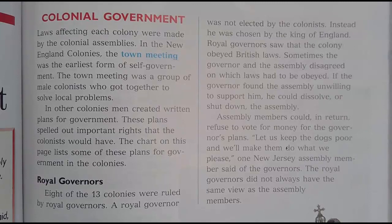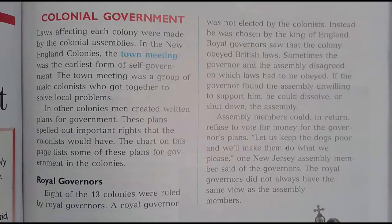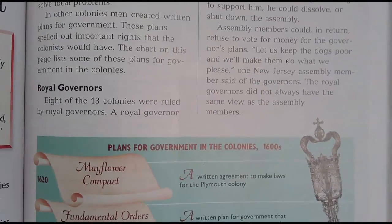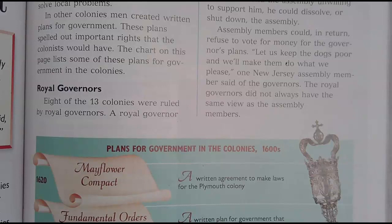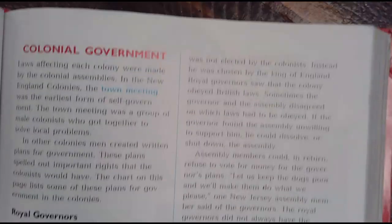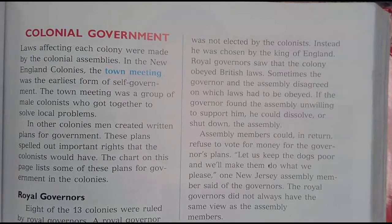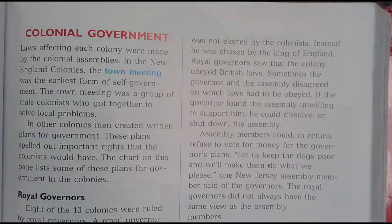The chart on this page lists some of these plans for government in the colonies. Royal governors — eight of the 13 colonies were ruled by royal governors. A royal governor was not elected by the colonists. Instead, he was chosen by the King of England. Royal governors saw that the colonies obeyed British laws. Sometimes the governor and the assembly disagreed on which laws had to be obeyed. If the governor found the assembly unwilling to support him, he could dissolve or shut down the assembly.